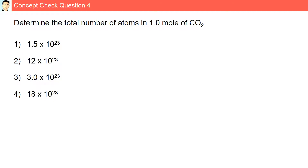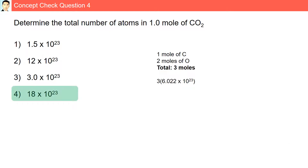Question 4. Determine the total number of atoms in 1 mole of CO2. There is 1 mole of carbon and 2 moles of oxygen in CO2, giving 3 moles of atoms total. Therefore, 3 multiplied by 6.022×10²³ gives us 18×10²³ — the total number of atoms in 1 mole of CO2.